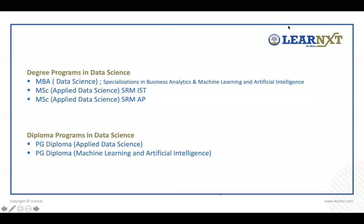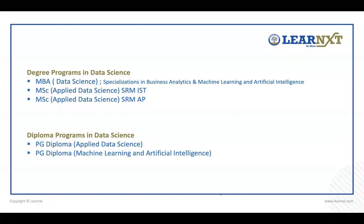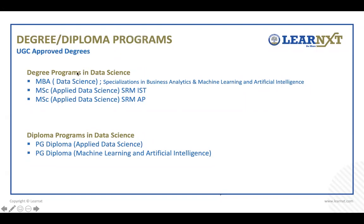Now let's address whether a degree in analytics is worth it. There are UGC-approved programs offered by SRM ISP Chennai and SRM University AP. There's an MBA in data science — a unique program that allows you to specialize in either business analytics or machine learning and artificial intelligence. These are two different specializations: business analytics for a more business-oriented role, or ML and AI for a more technical role. There's also an MSc in Applied Data Science offered by SRM Chennai, designed for BSc graduates and non-engineering graduates.